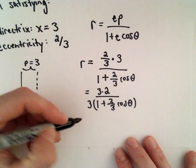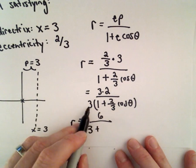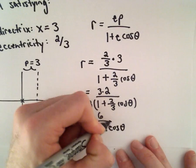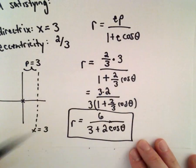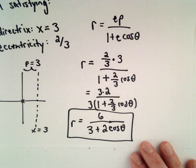That gives us the equation r equals 6 divided by 3 plus, well 3 times 2/3 gives us 2 cosine theta. So the equation will be r equals 6 divided by 3 plus 2 cosine theta. Alright, we're cool, thank you guys.